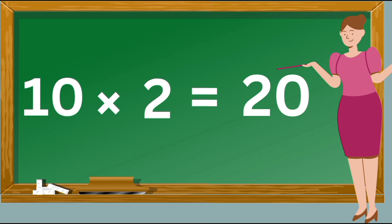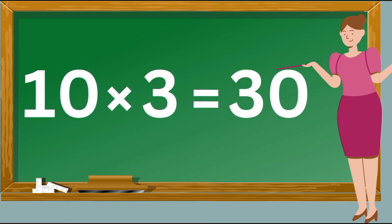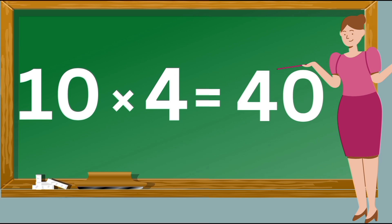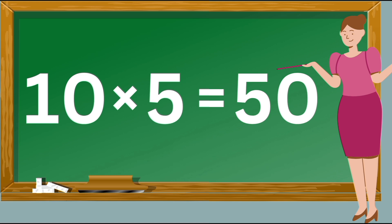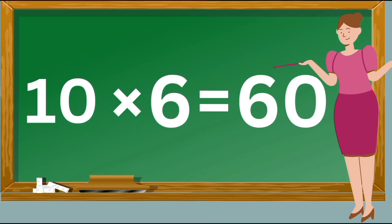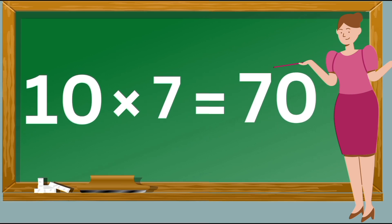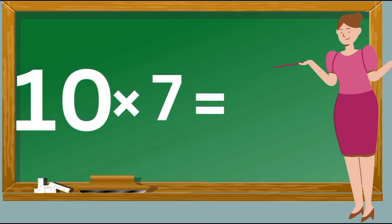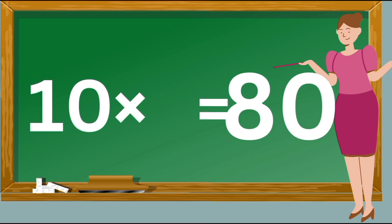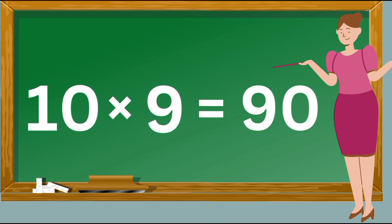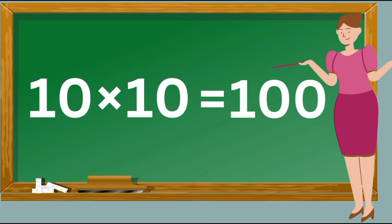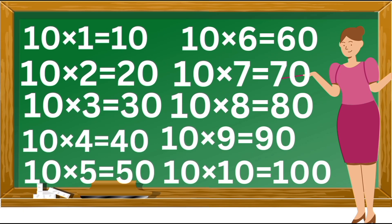10×1 is 10. 10×2 is 20. 10×3 is 30. 10×4 is 40. 10×5 is 50. 10×6 is 60. 10×7 is 70. 10×8 is 80. 10×9 is 90. 10×10 is 100. 10×1 is 10, 10×2 is 20, 10×3 is 30, 10×4 is 40, 10×5 is 50. 10×6 is 60, 10×7 is 70, 10×8 is 80, 10×9 is 90, 10×10 is 100.